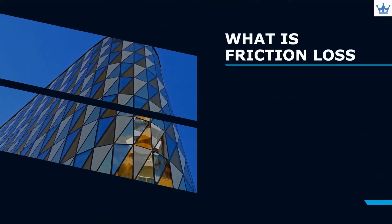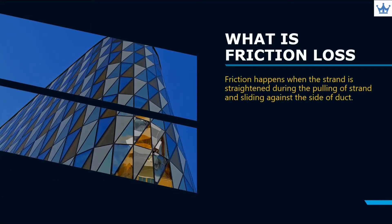What is Friction Loss? Friction happens when the strand is straightened up during the pulling of strand and sliding against the side of duct. The friction causes the force inside the strand to gradually reduce from jacking point to the end of tendon.